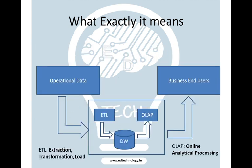This diagram actually helps you understand what it means. As you can see, we have the operational data, which is our day-to-day data, which is fed into the system where extraction, transformation, and loading is done into the data warehouse. Then the data warehouse performs OLAP, which is Online Analytics, and this analytics goes to the business end users in the form of business intelligence for decision making.